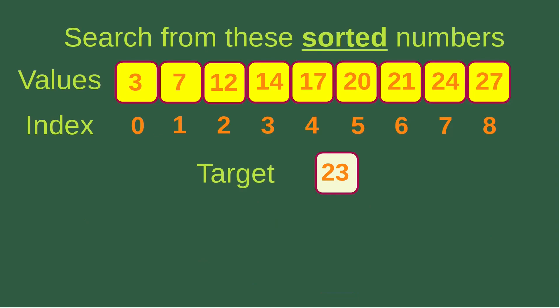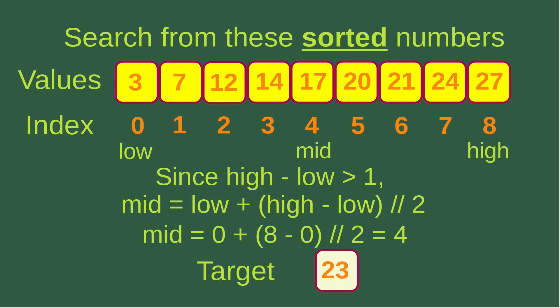Let us see another example. Suppose I want to search for number 23 using the ubiquitous binary search process, and the array is already sorted. I set the low index to zero and the high index to eight, since there are nine elements. High minus low is eight — larger than one — so I compute the mid-index using the formula and get four, which corresponds to a value of 17.